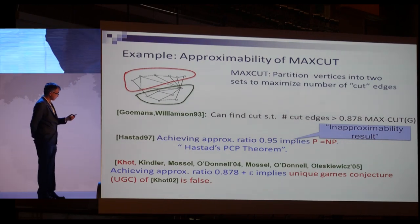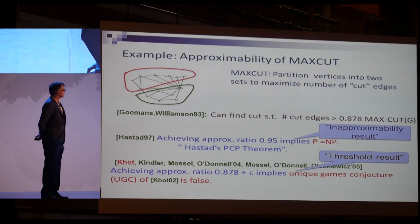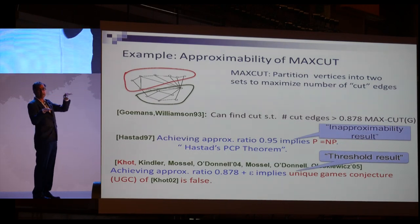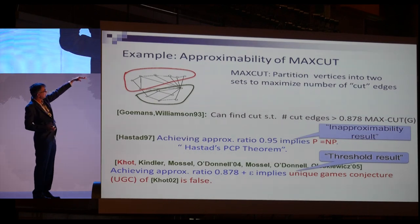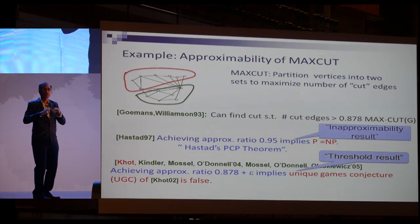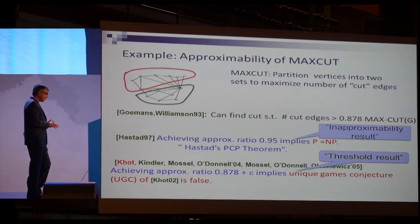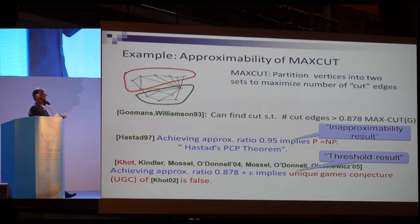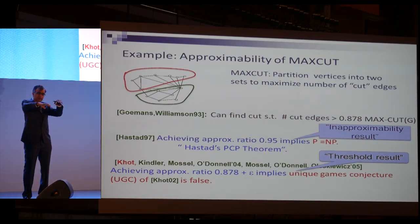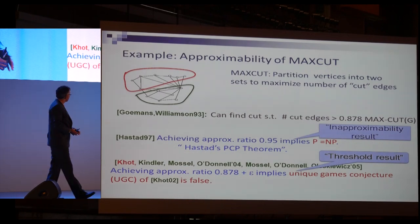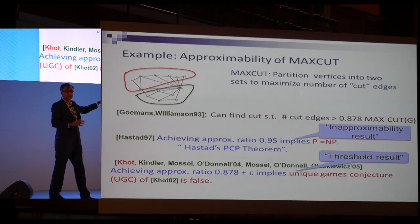This kind of result is called a threshold result, because it shows the current algorithm is the best: there's an algorithm achieving a certain approximation ratio, and this result says doing any better is NP-hard. So there's a threshold of approximability. A priori it need not be the case — maybe you can achieve better approximations with more time — but for this problem there's a sharp threshold.